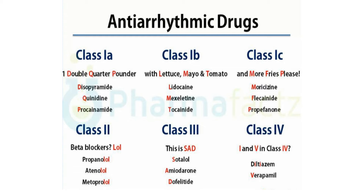Class three drugs act on the potassium channel — they are potassium channel blockers. The mnemonic is SAD: sotalol, amiodarone, and dofetilide. Remember, sotalol is a beta blocker but it also has class three activity; specifically, D-sotalol has class three activity. Amiodarone is a very good drug for new-onset atrial fibrillation but is notorious for a huge range of side effects. It also has a very long plasma half-life and could last for two months — it's dubbed a '100-day drug.'